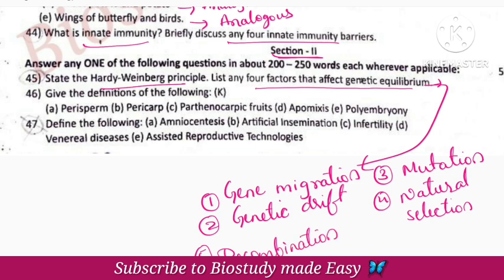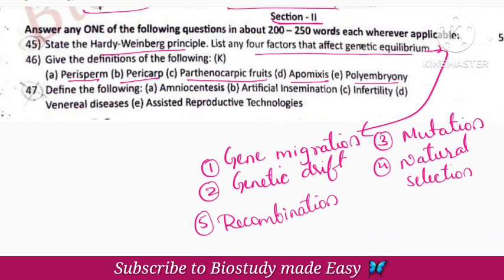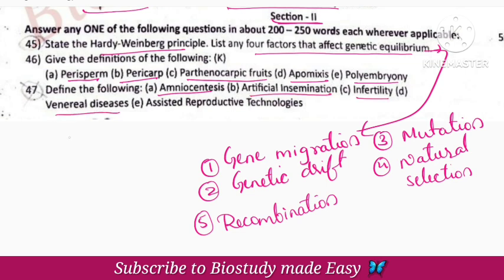Sexual reproduction in flowering plants — terms covered include perisperm, pericarp, parthenocarpic fruit, apomixis, and polyembryony. Reproductive health topics include amniocentesis, artificial insemination, infertility, venereal diseases, STDs, and assisted reproductive technologies (ART).